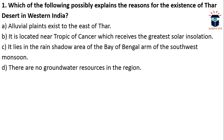The Thar Desert hardly has alluvial plains to its east; those are in the Pakistan area. Option B — locating it near the Tropic of Cancer — is not the most plausible. The answer C is most plausible because the Thar Desert lies in the rain shadow area of the Bay of Bengal arm of the southwest monsoon.